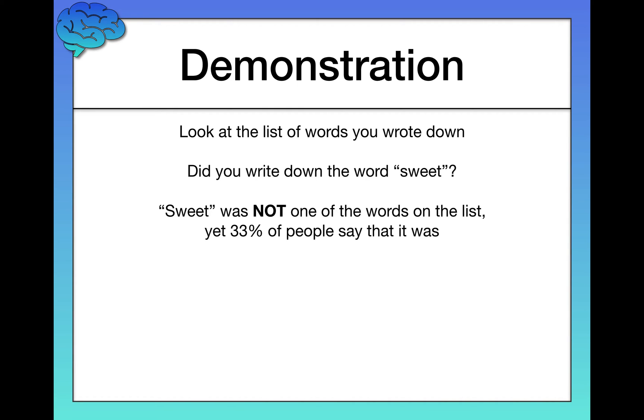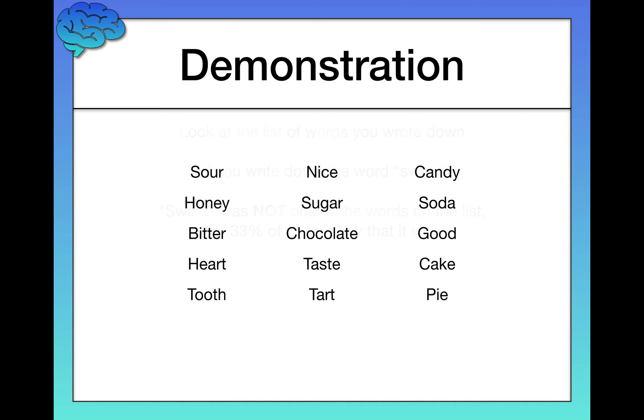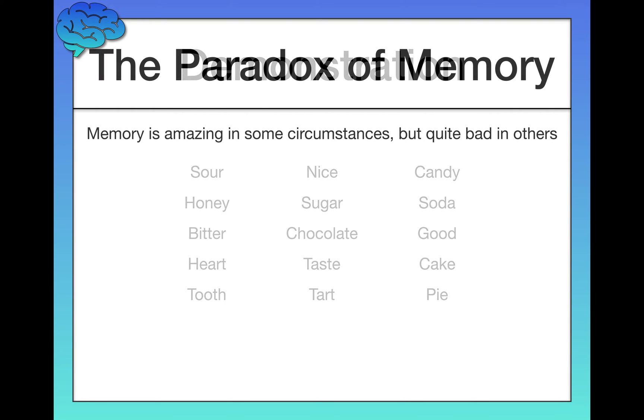Why does this happen? We're misremembering. This illustrates the paradox of memory, but why do we make this memory mistake? Well, it's because a lot of the words that I read out kind of clustered around this theme of sweet. A lot of the words were about taste. I'll show you them right here so that you believe me that sweet was not part of this list: sour, honey, bitter, heart, tooth, nice, and here's a lot of even more words related to sweet—sugar, chocolate, taste, tart, candy, soda, good, cake, pie. A lot of these have to do with sweet, and so when you're recalling, trying to think back as much as possible to the words that I said, sweet tends to come up because it was a related theme that was spread throughout all of these words.